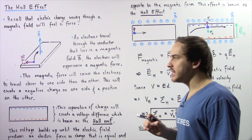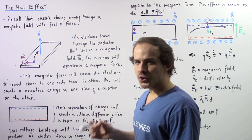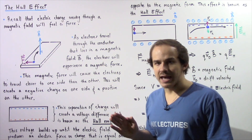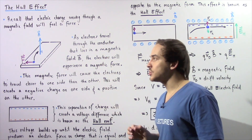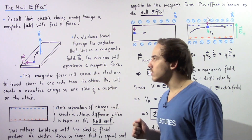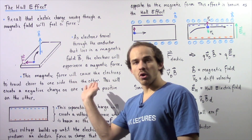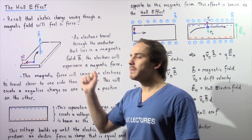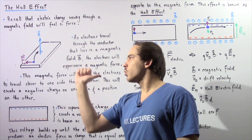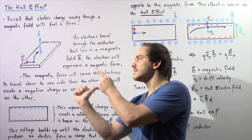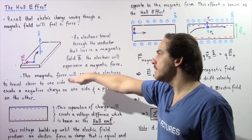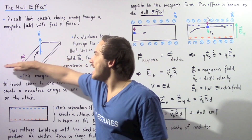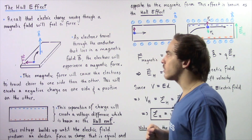The direction of that magnetic force can be determined using right hand rule number three. We take our right hand and direct our fingers in the same direction as the motion of our electron — essentially into the board. Then we curl our fingers in the direction of our magnetic field, which is upward. We extend our thumb, and because this is a negative charge, we flip our thumb, which implies that our magnetic force points in the negative direction along our x-axis.